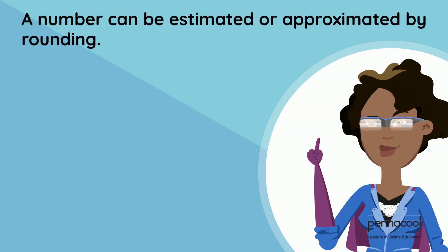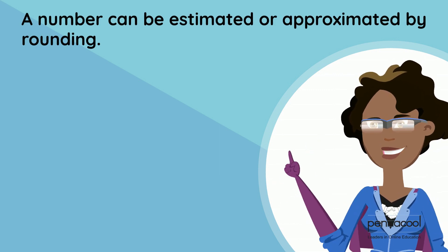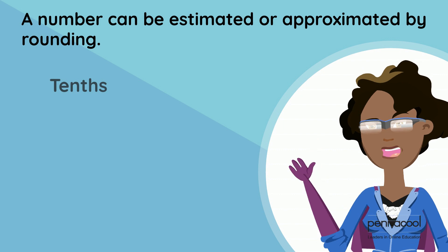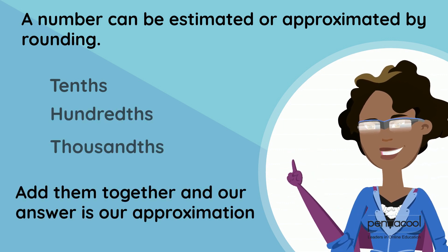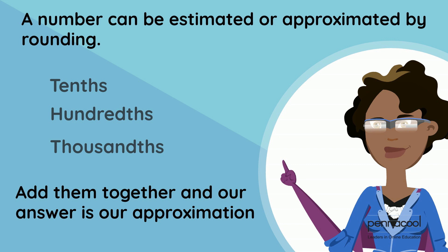A number can be estimated or approximated by rounding. We can round to the nearest tenths, hundreds, thousands, so on and so forth, and then add them together and our answer is our approximation.